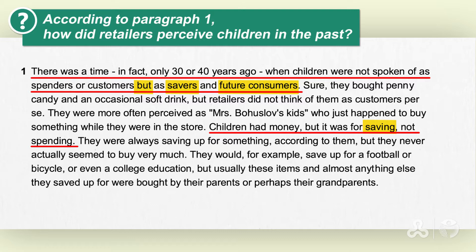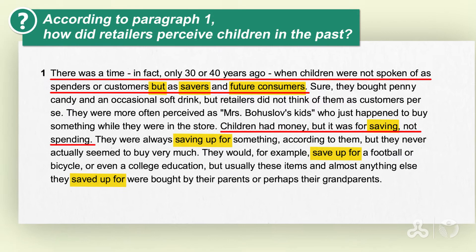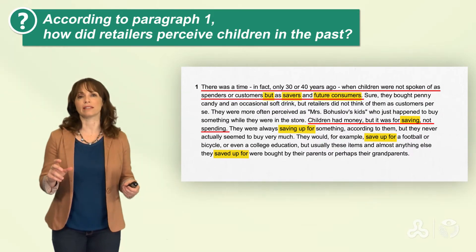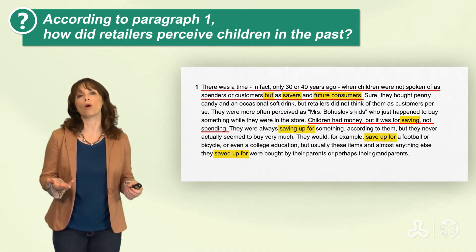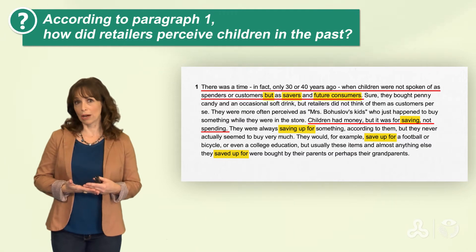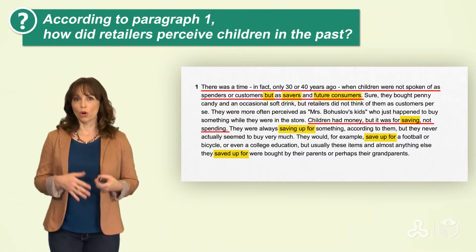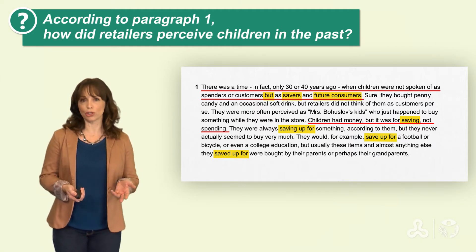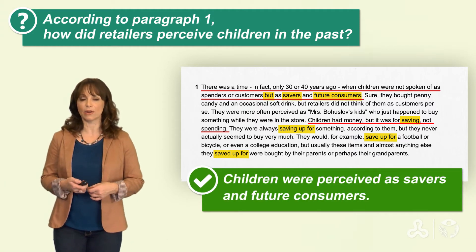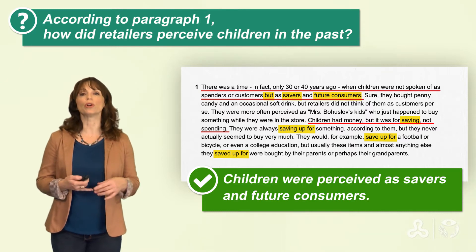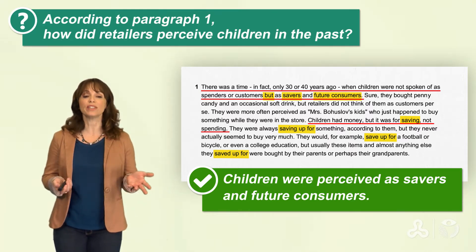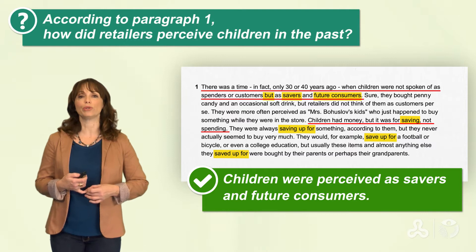You should have also noticed words like 'savers', 'saving', 'to save up for' — these words are repeated in the text. If you want to give an answer, the answer should look something like this: children were seen as, or perceived as, savers and future consumers.